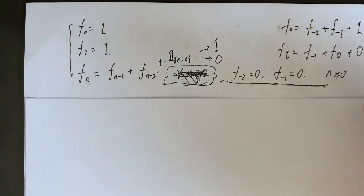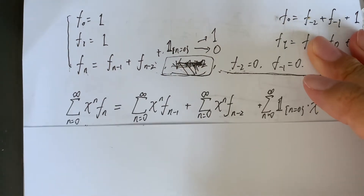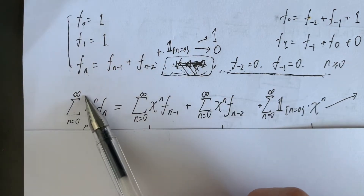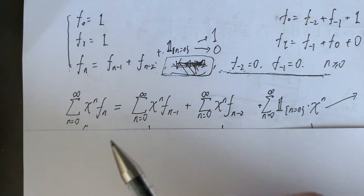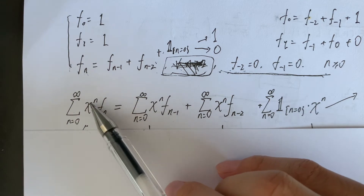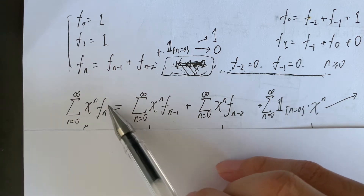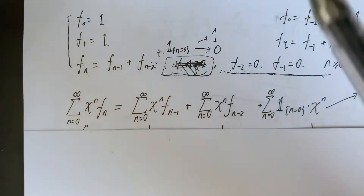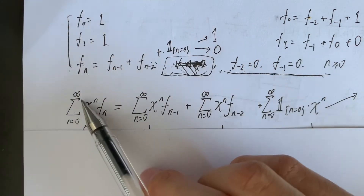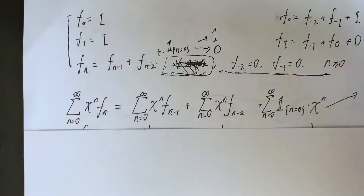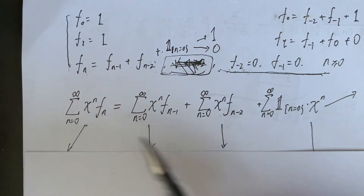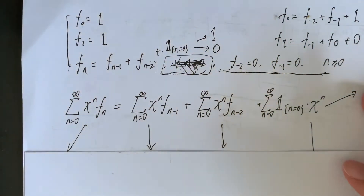The next step is to define the generating function. We multiply x^n to every term of the recurrence equation and then take the summation over all n. The summation preserves the equality, so we get the generating function equation. This is the first step of the generating function approach.